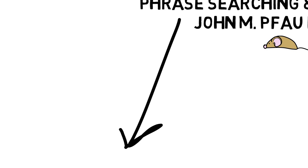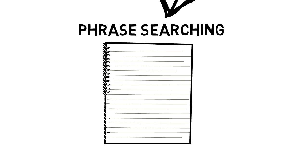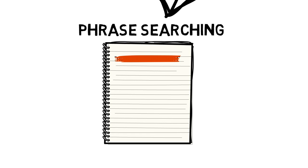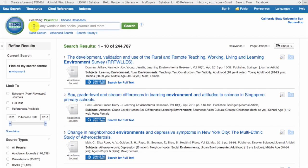Tip one: phrase searching allows you to place quotation marks around one or more words that you want to search together as a phrase. For example, 'reproductive health' will retrieve these two words in that order, side by side. Leaving the quotation marks off might retrieve other results not relevant to your search, such as information about mental health or about reproduction in mice. Let's take a look at how this works in the database PsycInfo.